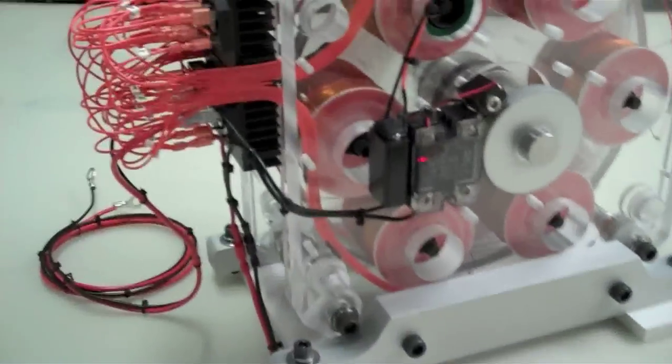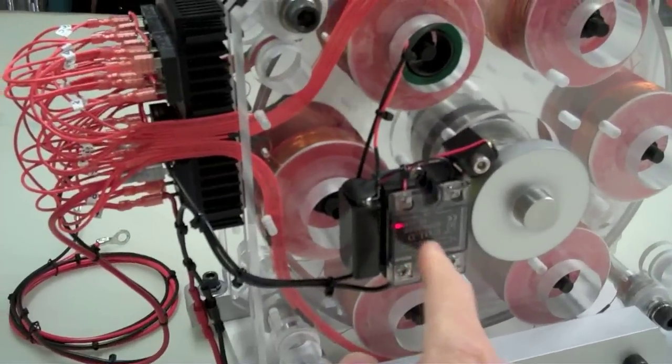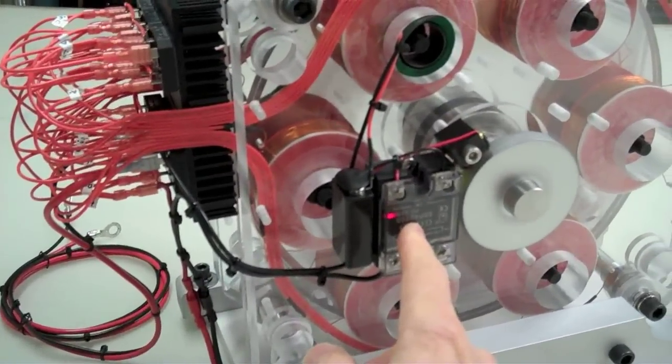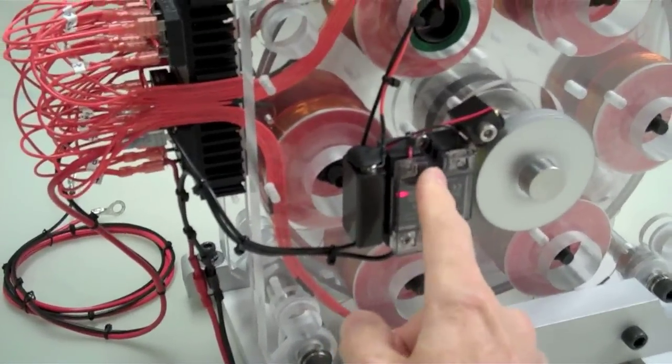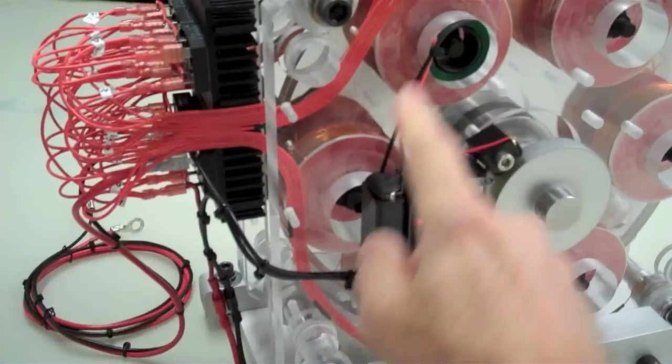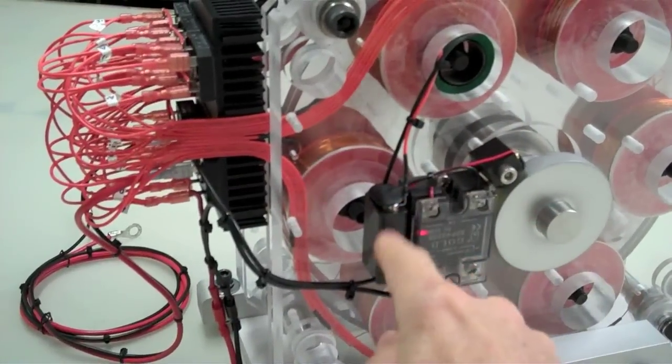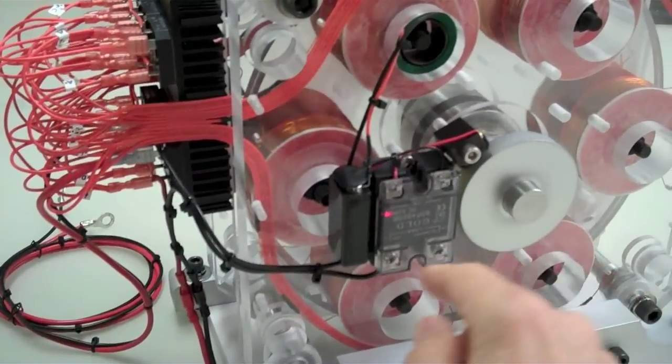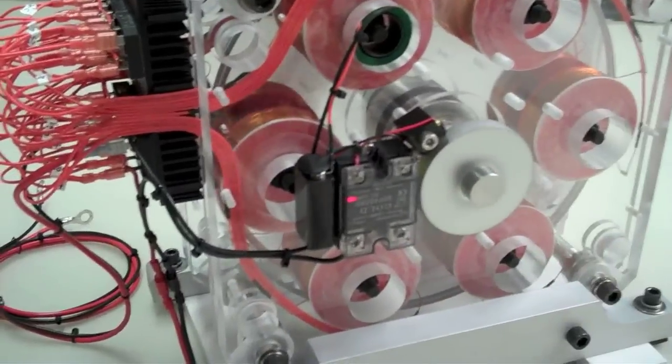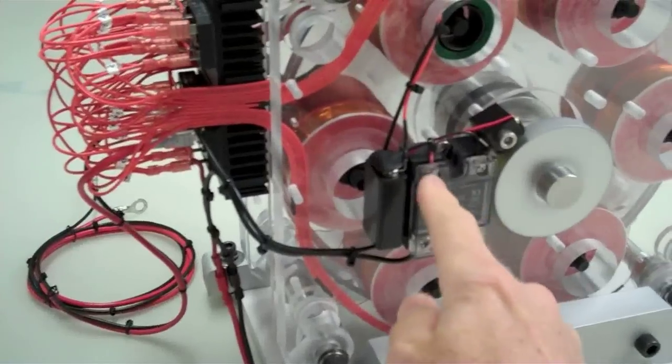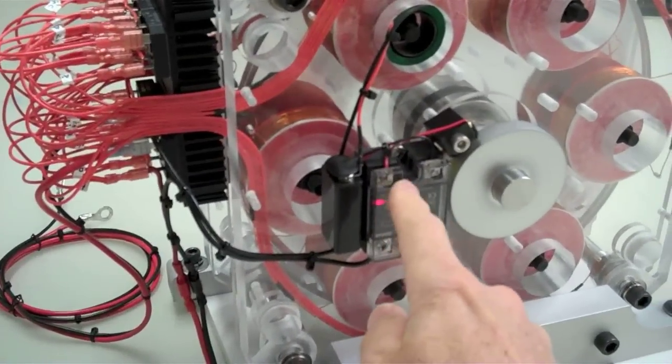There's field effect transistors inside this bridge, or inside this solid state relay. This is the switch side, activated by the charged up battery here through the switching here. So it just gets a 9 volt pulse that can handle up to 32 volts to operate the switch.